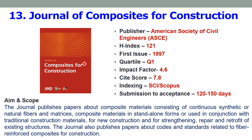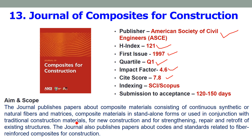Thirteenth is the Journal of Composites for Construction, focused mainly on composite materials, published by ASCE (American Society of Civil Engineers). The H-index is 121 and the first issue was published in 1997. It is a Quartile 1 journal with an impact factor of 4.6 and a site score of 7.8. Indexing is SCI and Scopus. Submission to acceptance takes 120 to 150 days — within 5 months. The journal covers composite materials and their applications in engineering, including natural and synthetic fibers, matrix materials, fibrous composites, strengthening of structures, and repair and retrofitting using composite materials.